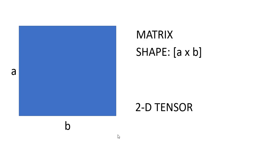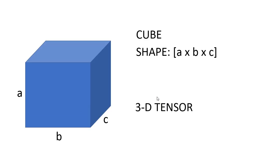Let's take another example. This is a matrix of shape A by B — it is a two-dimensional array, so we call it a 2D tensor. Now let's take another example — this has three dimensions: A, B, and C, so this is a 3D array and we call it a 3D tensor.